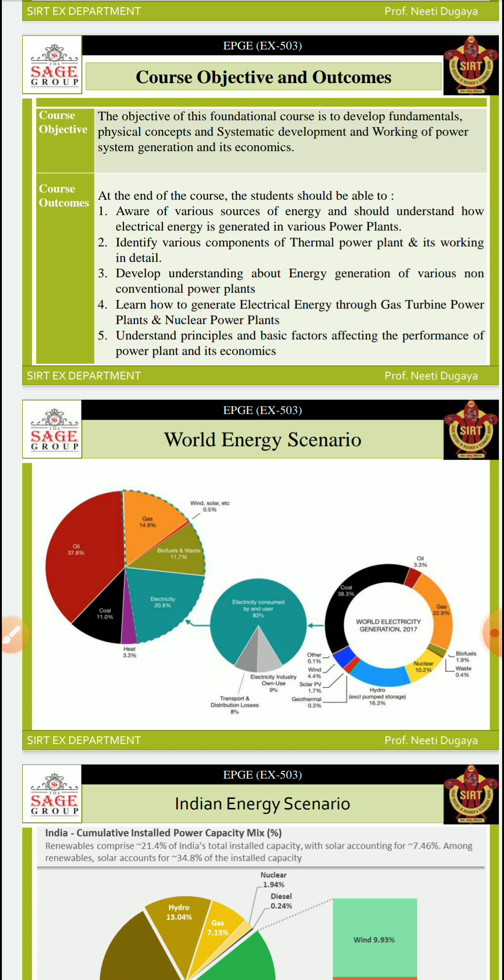There are five course outcomes. At the end of the course, students should be able to: (1) be aware of various energy sources and how electrical energy is generated in various power plants; (2) identify components of thermal power plants and their working; (3) understand energy generation from non-conventional power plants; (4) learn how to generate electrical energy through gas turbine and nuclear power plants; and (5) understand the principles and factors affecting power plant performance and economics.